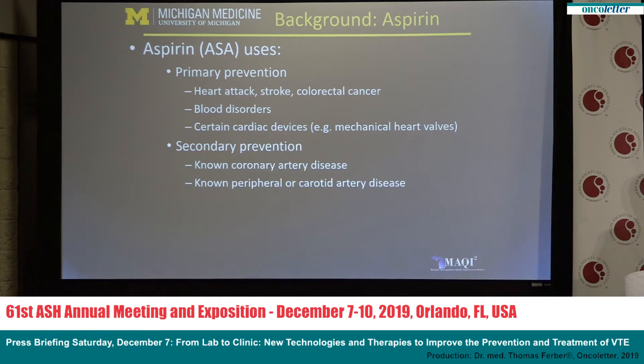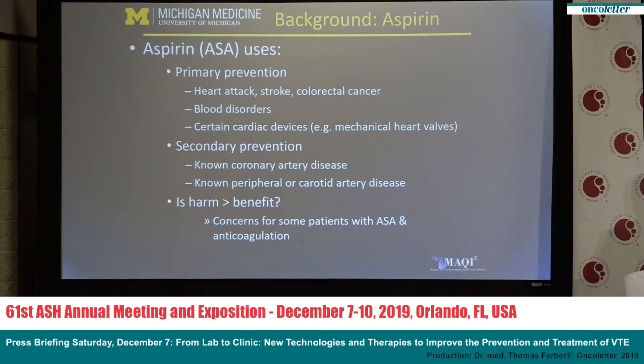For patients with established vascular disease, aspirin is used in the secondary prevention of thrombosis for patients with known coronary artery disease, peripheral arterial disease, or carotid artery disease. In recent years, there's been a growing body of evidence that raises the question: is adding aspirin doing more harm than good for certain patients? Specifically, there's a question of whether aspirin is increasing the rates of bleeding without protecting patients from adverse thrombotic outcomes.